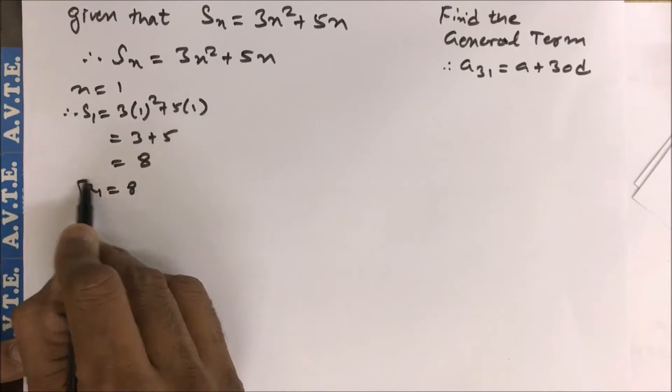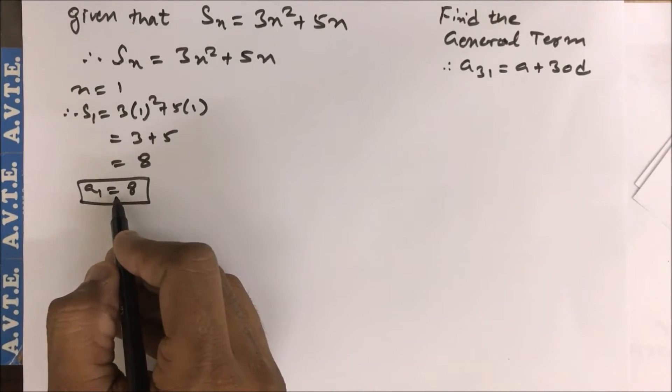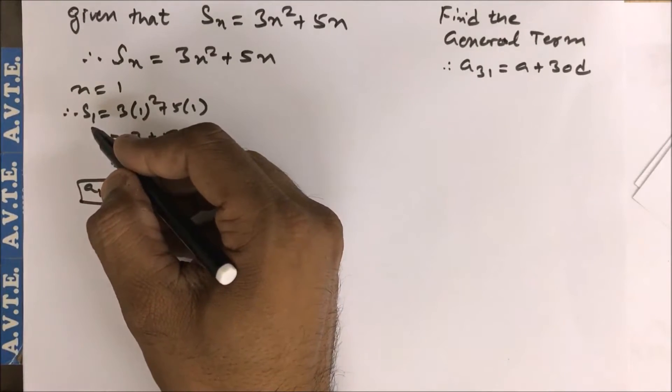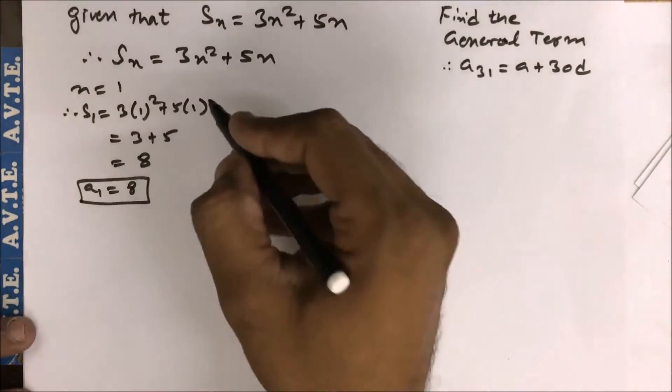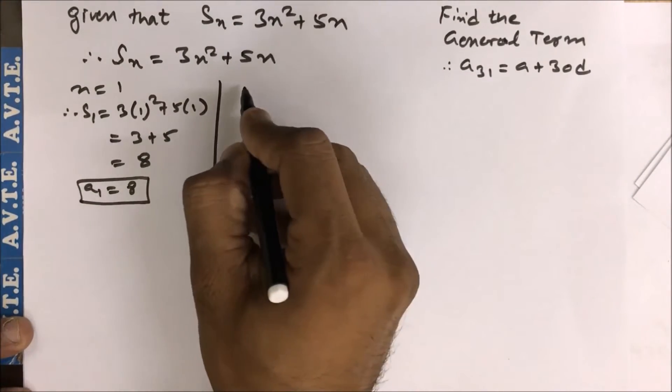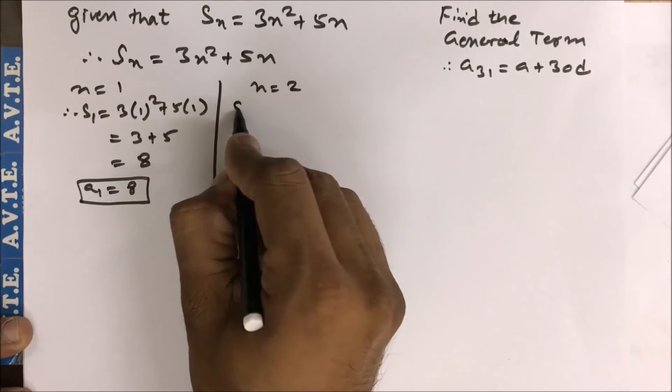This is your a₁ because whosoever is the first term, it has to be the sum of one term, and sum of one term is always the first term of the given AP. Now you have to put n as 2.